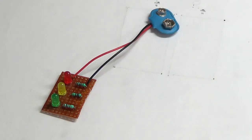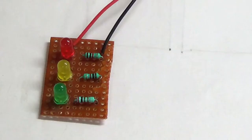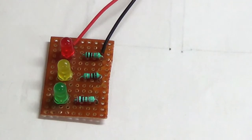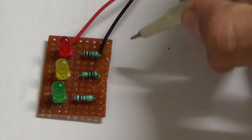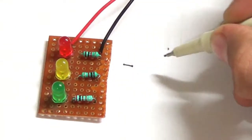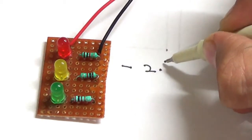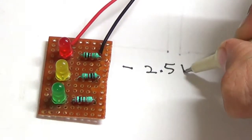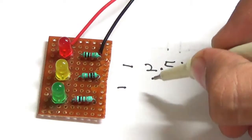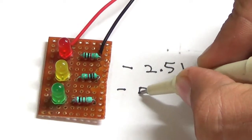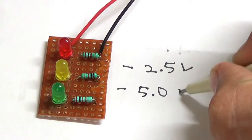After a bit of testing on my power supply, I verified that the red LED will glow at 2.5 volts, the yellow LED will glow at 5 volts, and the green one will glow at 8.5 volts.